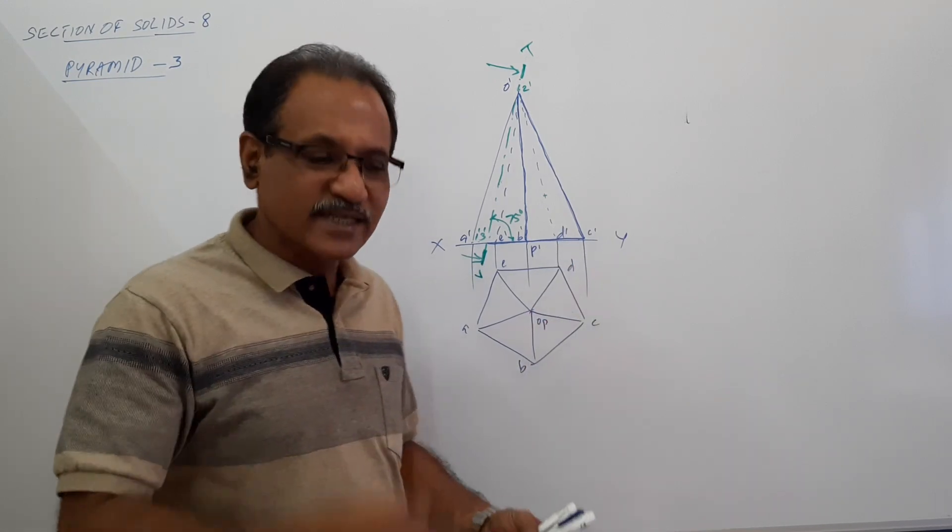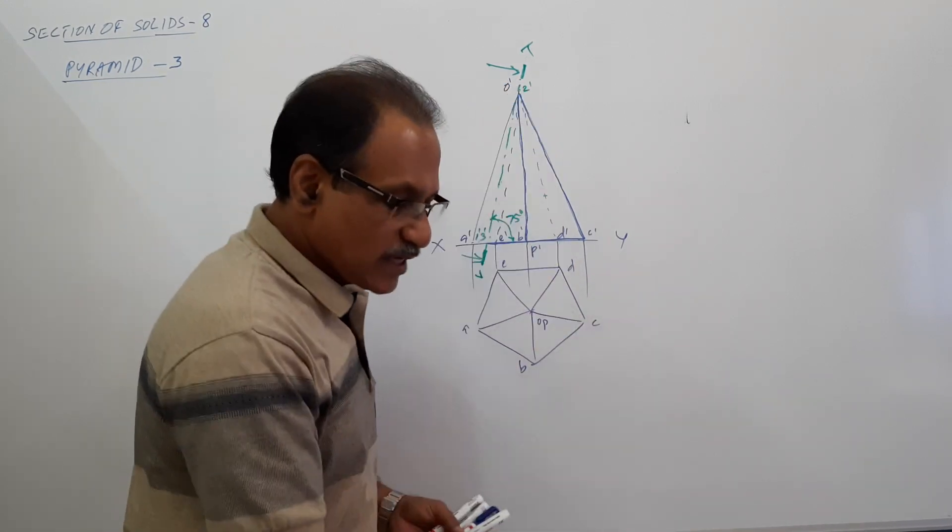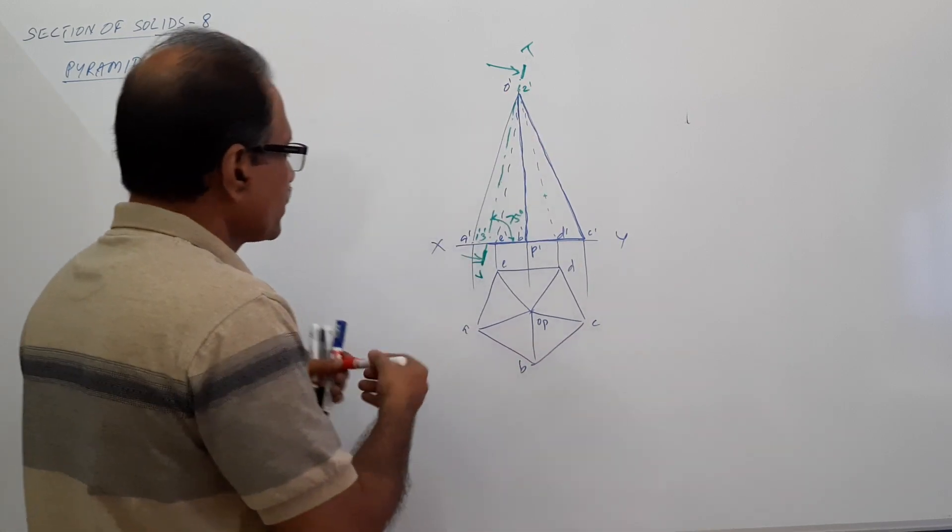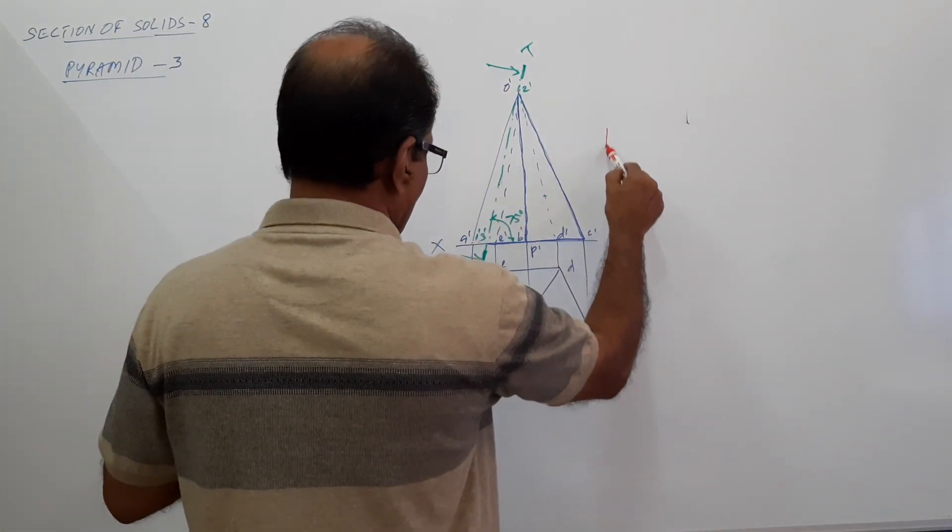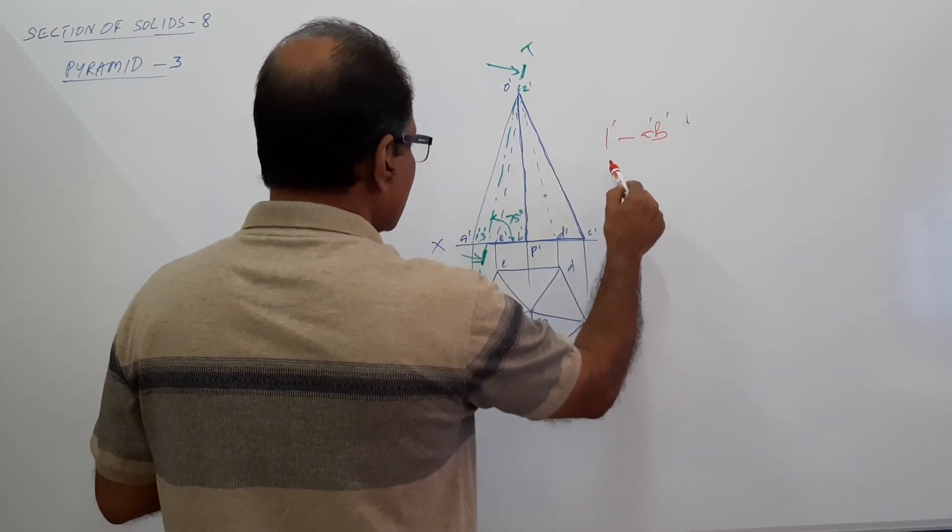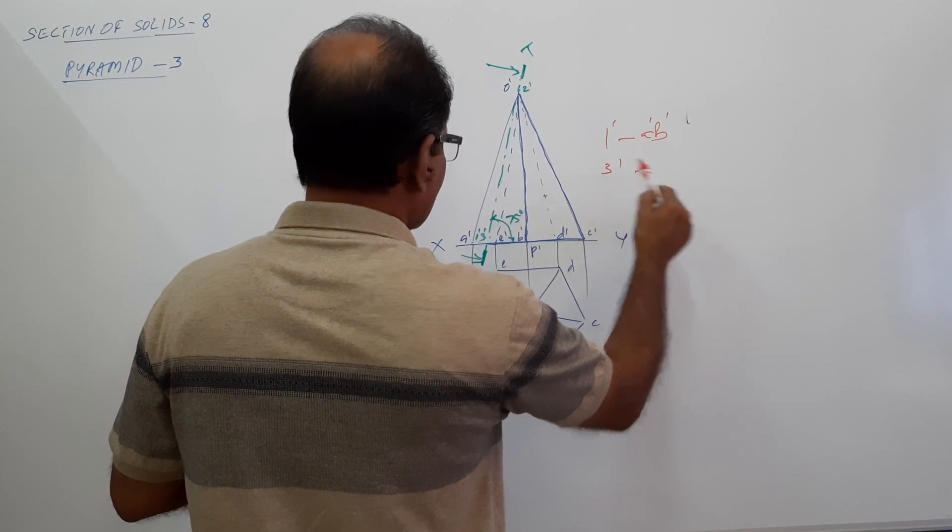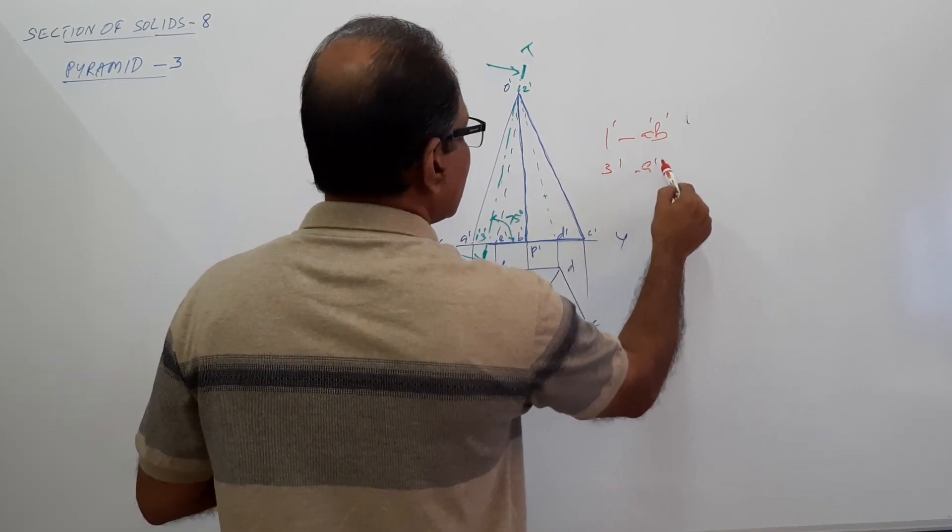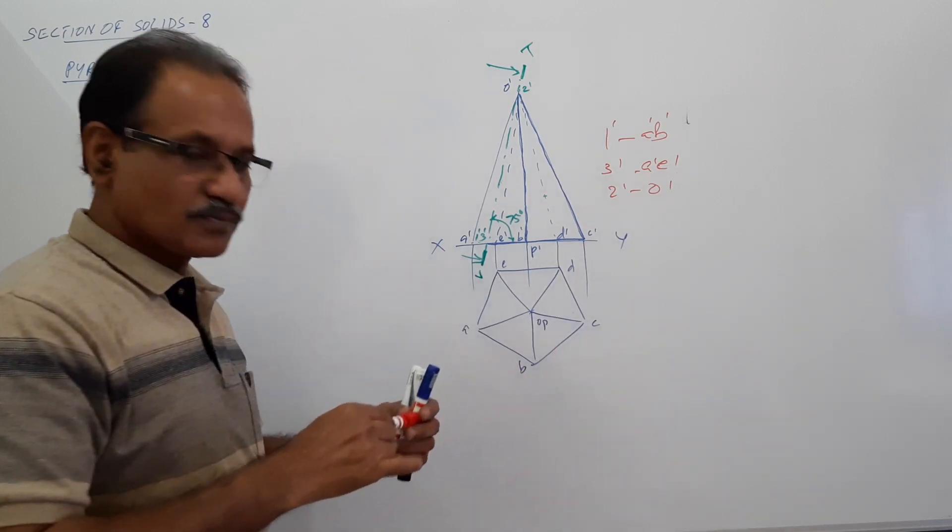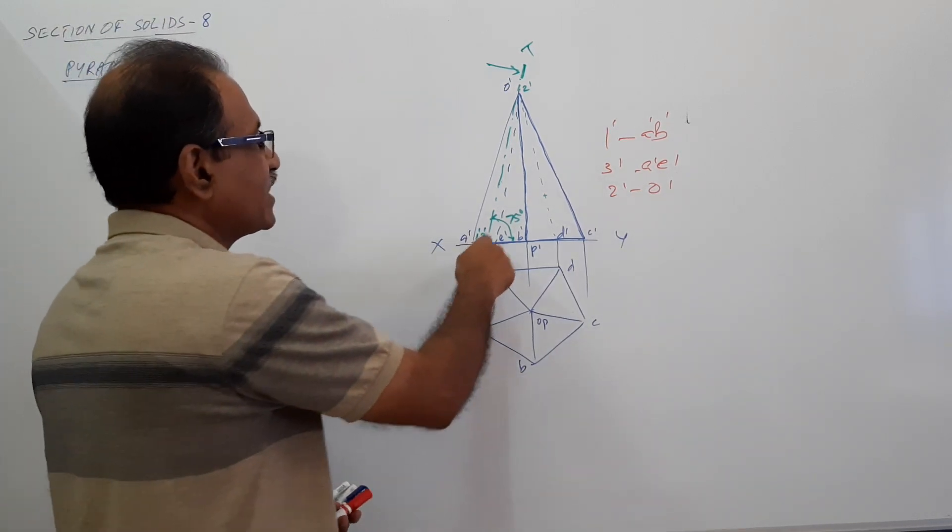So it doesn't cut any of the slanted edges. Cut the base at 1, 2, 3. 1, 2, 3. 1 at the base. Where is 1? 1 is at AB. 1 dash is at A dash, B dash. 3 dash is at A dash, E dash. 2 dash is at 4 dash. That's all. Agreed? So join 1 dash, 2 dash, 3 dash.